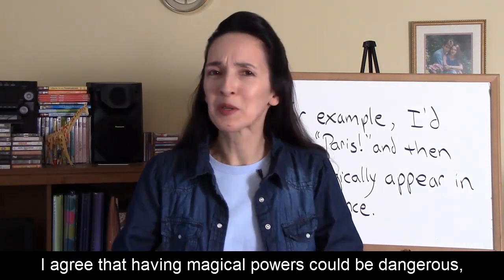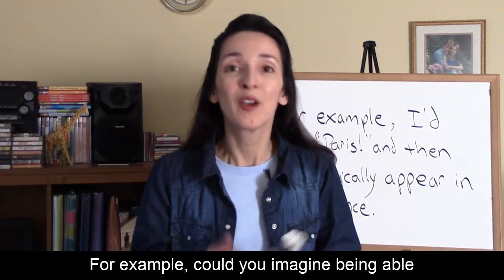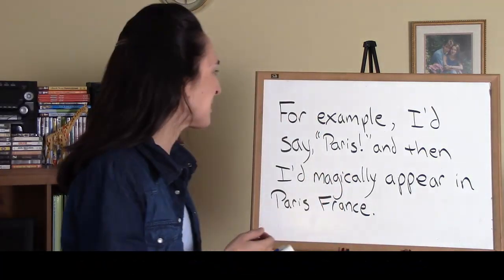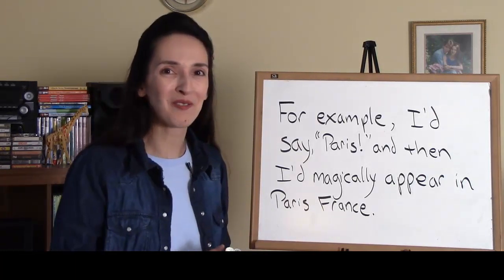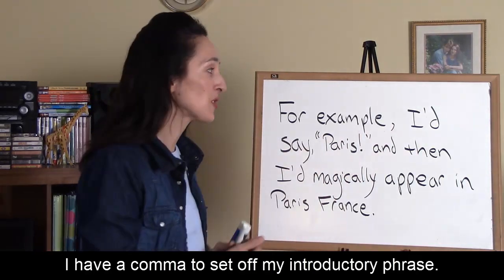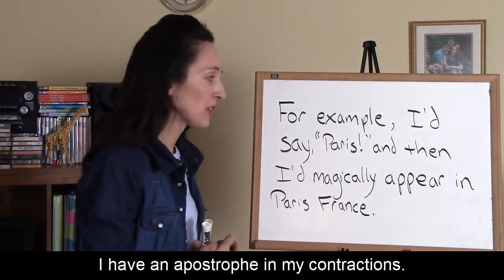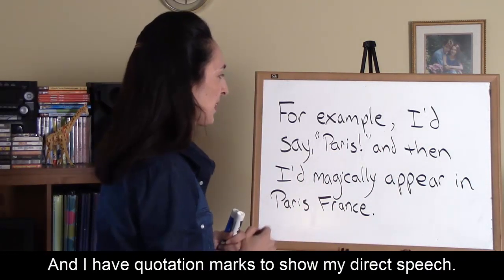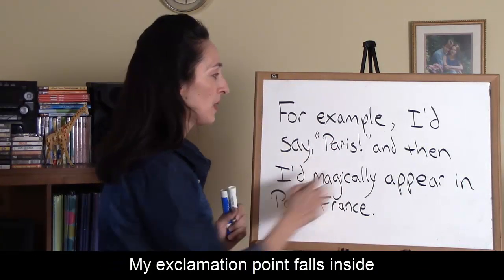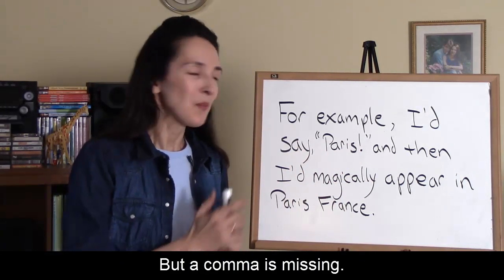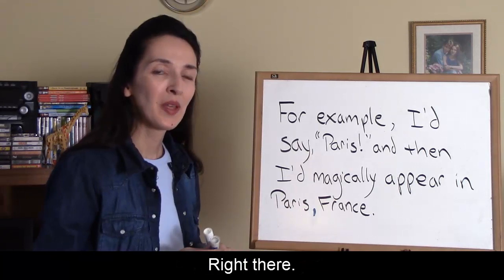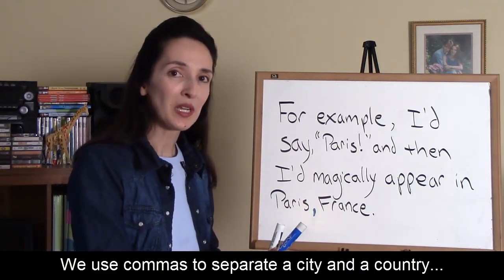I agree that having magical powers could be dangerous, but I still think it would be pretty cool to do magic. For example, could you imagine being able to transport yourself from one place to another? I'd say 'Paris!' and then I'd magically appear in Paris, France. This statement has several correct elements — a comma for the introductory phrase, apostrophes in contractions, final sentence punctuation, and quotation marks for direct speech. But a comma is missing: we use commas to separate a city and a country, or a city and a state.